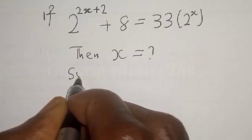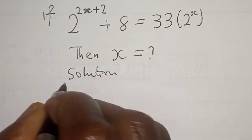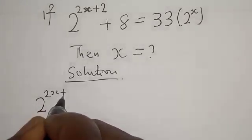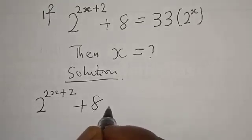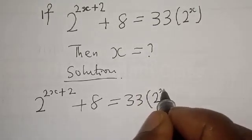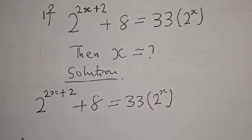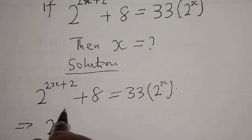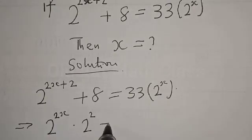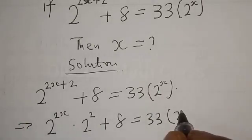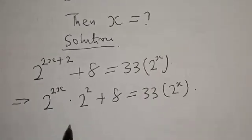Solution: we have 2 raised to power 2x plus 2 plus 8 is equal to 33 into 2 raised to power x. This implies that we have 2 raised to power 2x multiplied by 2 raised to power 2 plus 8 is equal to 33 into 2 raised to power x.